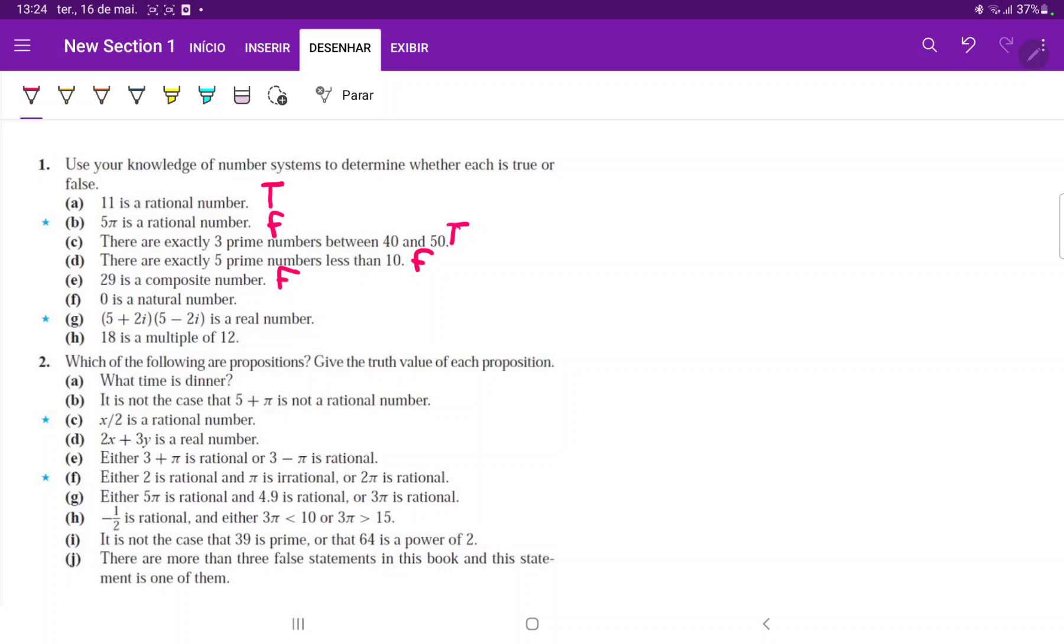0 is a natural number. This is also false, because the natural numbers are defined to be a set such that it's equal to 1, 2, 3, 4, and so on. So 0 is considered part of the integers, not the natural numbers, so this is false.